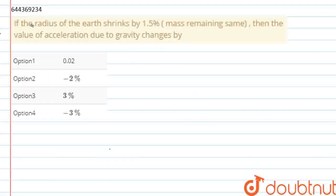This question says that if the radius of Earth shrinks by 1.5% and the mass remains the same, then the value of acceleration due to gravity changes by... So here we need to find out the change in acceleration due to gravity when the radius of Earth shrinks by 1.5% and the mass remains the same.